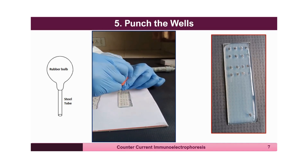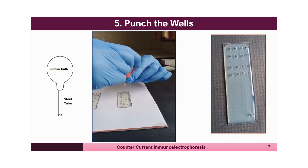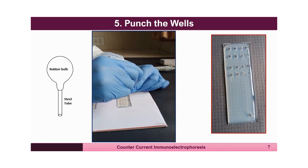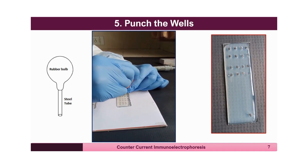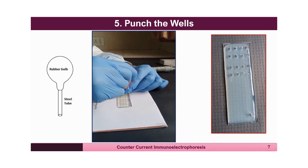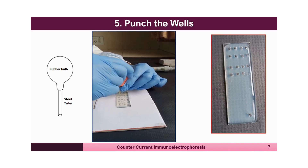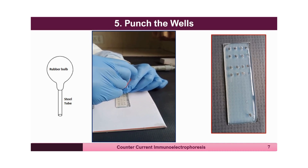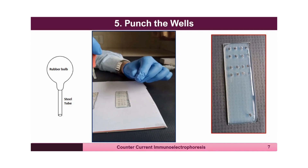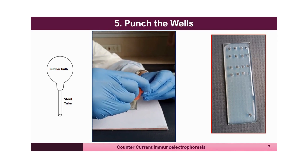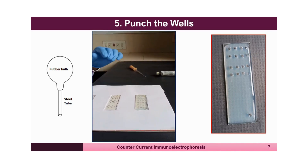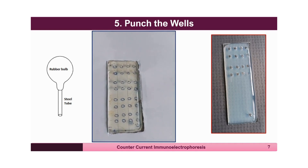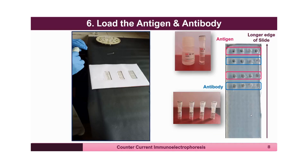Once the agarose is cleared, the wells are ready for loading. Dedicate the left-hand side wells for the antigen and the right-hand side wells for the antibody. Each pair of wells is approximately 5 mm apart and each paired row is approximately 1 cm apart. Punch one extra well on one corner of the slide so that side can be identified and connected to the positive pole, avoiding confusion after punching the entire slide.